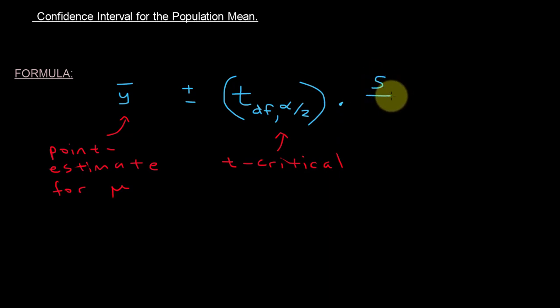We saw sigma over square root of n, but this actually says s. That was one of the whole reasons why we're now in the t distribution instead of the z distribution. So this is the standard error.